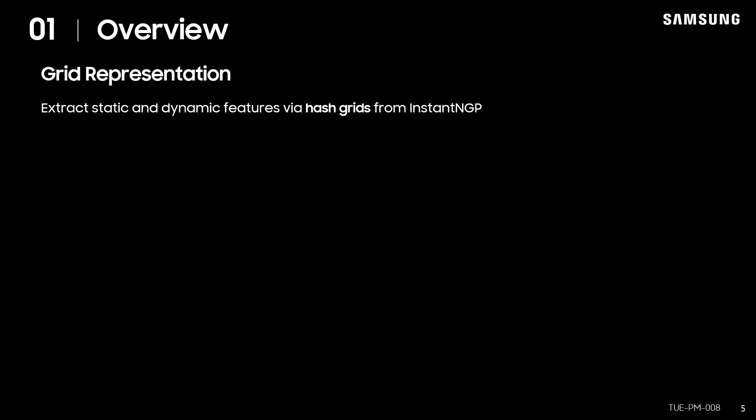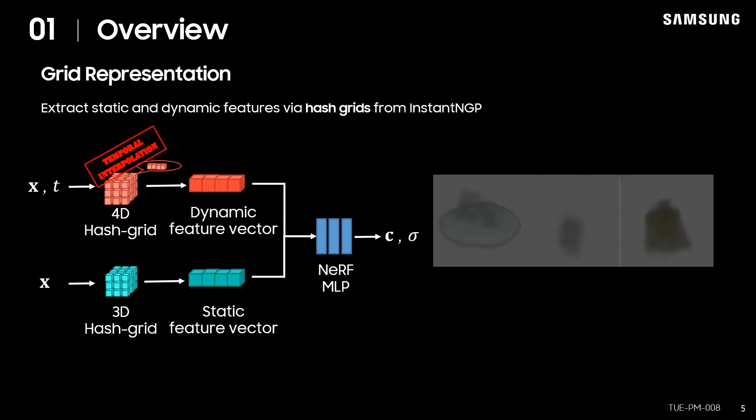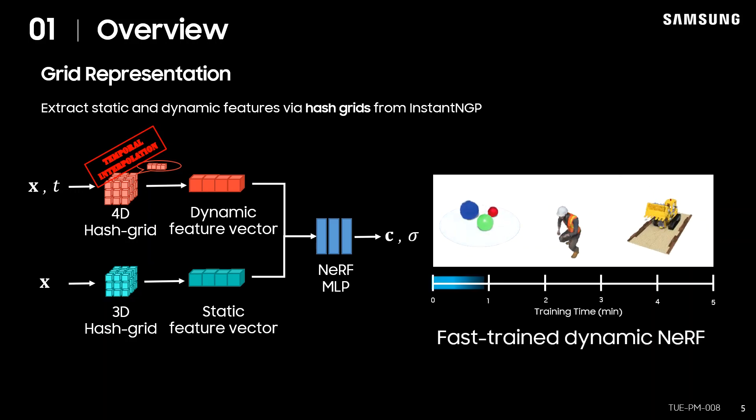For the grid representation, static and dynamic features are extracted from 3D and 4D hash grids respectively, which allows for dynamic NeRF training in just a few minutes.